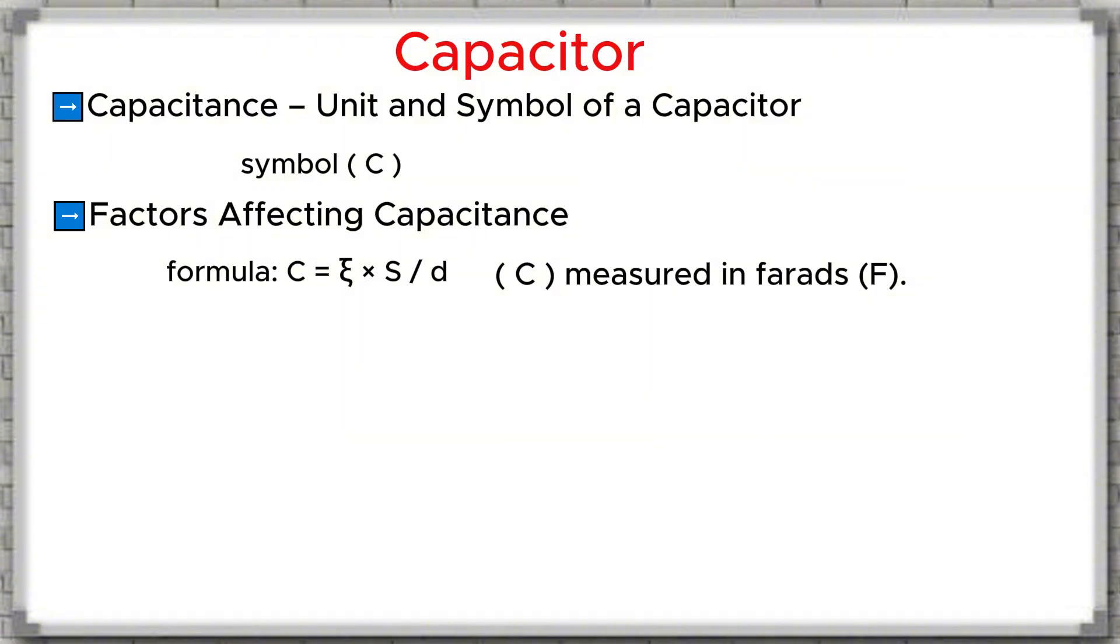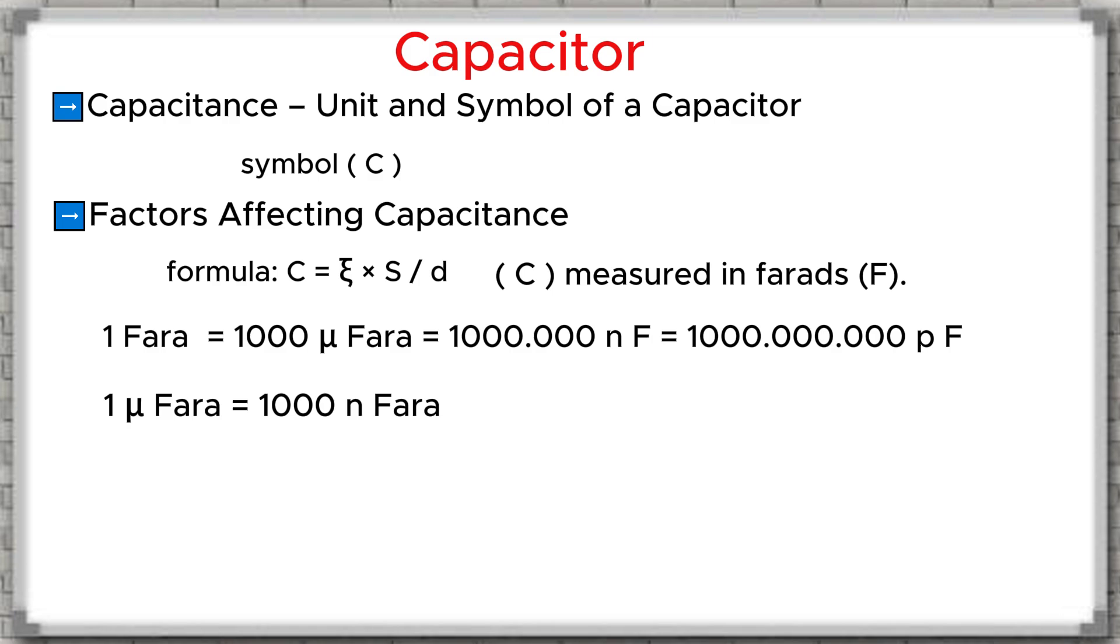As for the units of capacitance, we have the following conversion formula: 1 Farad equals 1,000 millifarads equals 1,000,000 nanofarads equals 1,000,000,000 picofarads. 1 millifarad equals 1,000 nanofarads. 1 nanofarad equals 1,000 picofarads.